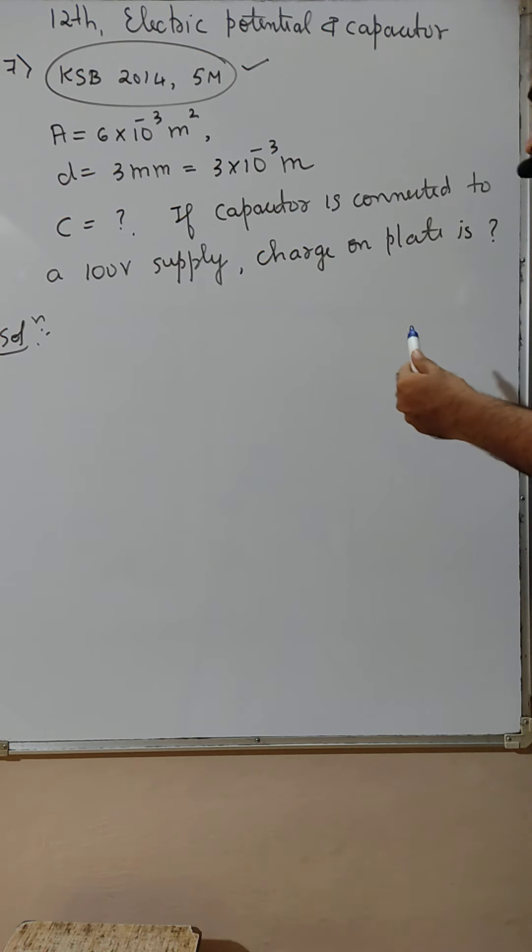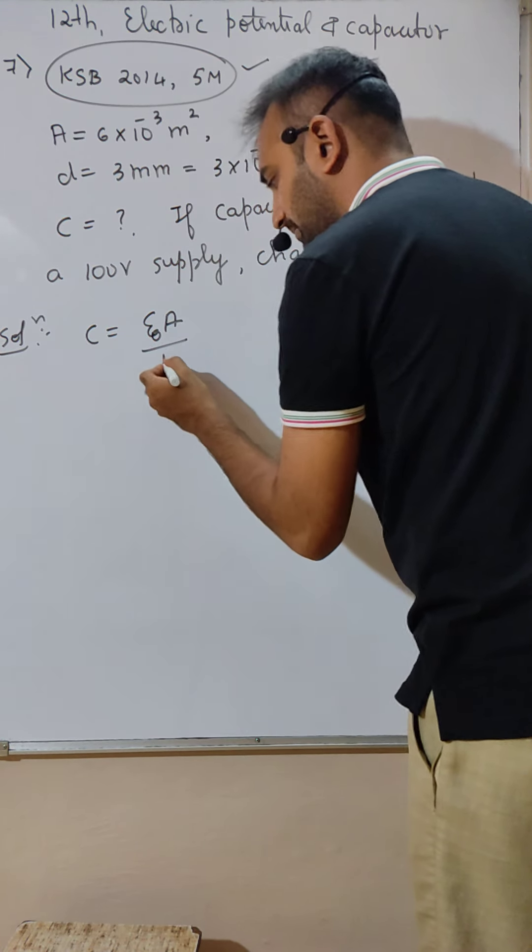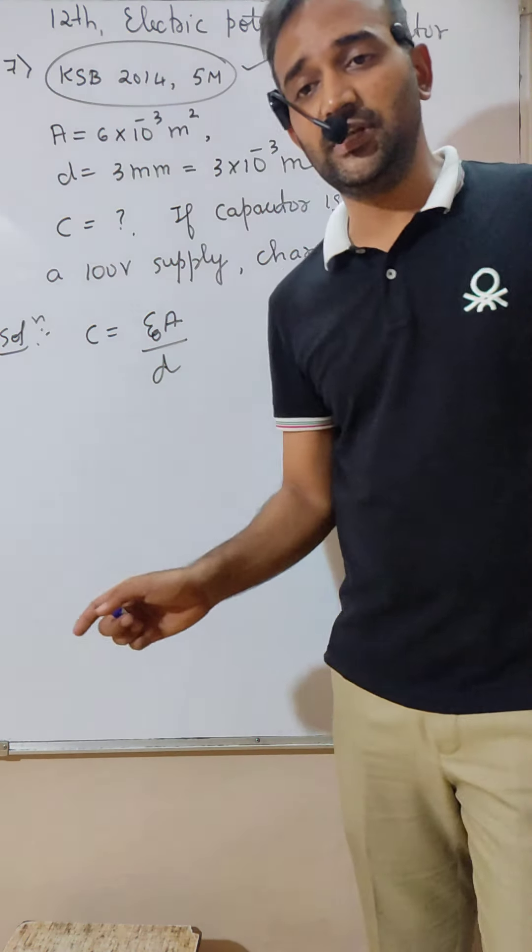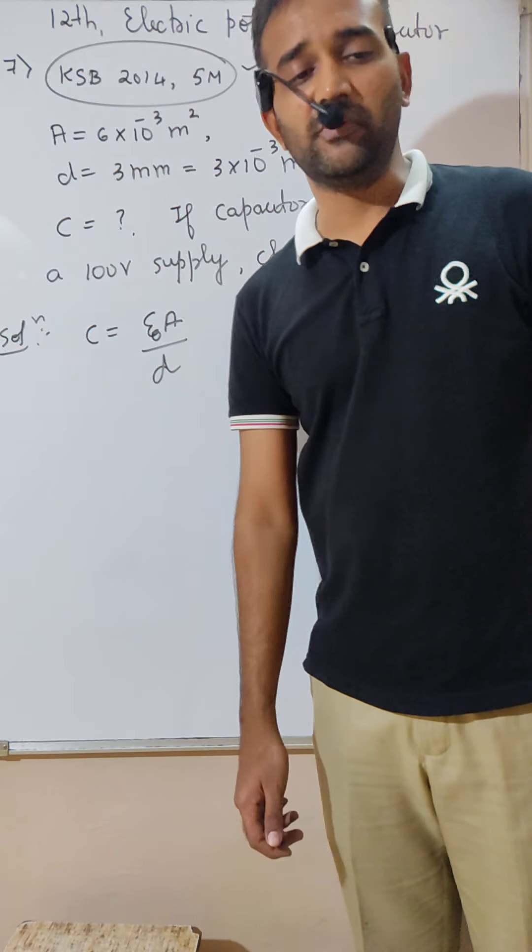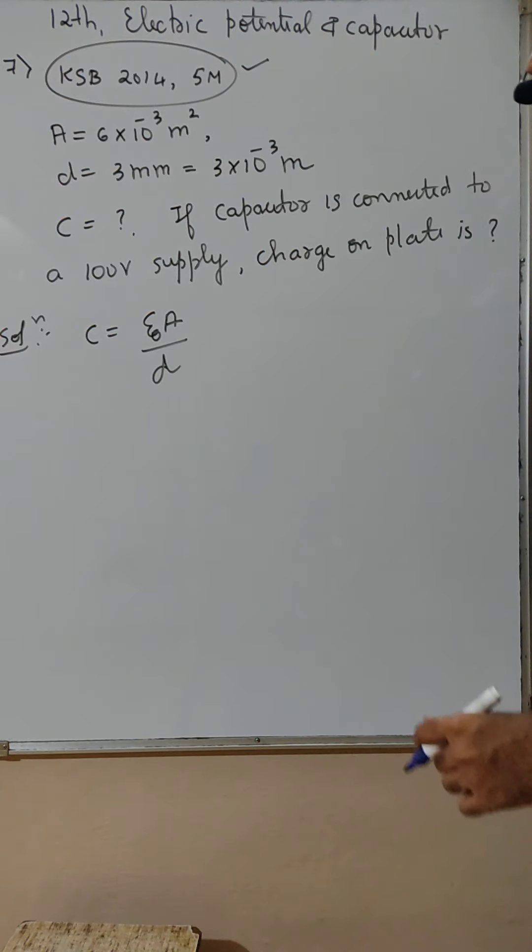Capacitance formula is given by C equals epsilon not A by D. Step number 1, writing the formula will fetch you half mark to one mark, normally one mark.